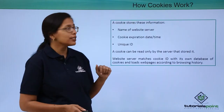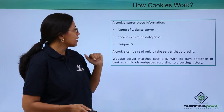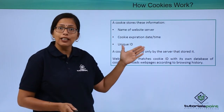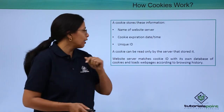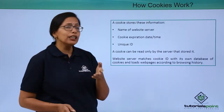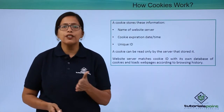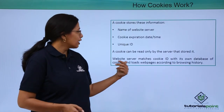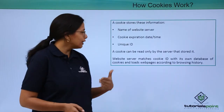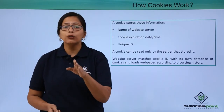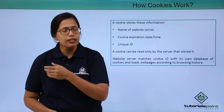Now let's see how cookies actually work. The cookies will store information such as the name of the website server, the cookie expiration date and time which decides when the persistent cookie will expire, and the unique ID. The cookie can be read only by the server that has placed it. When you visit that website again, the website server will match the cookie ID with its own database and load the web pages according to your browsing history or preferences stored in its database.